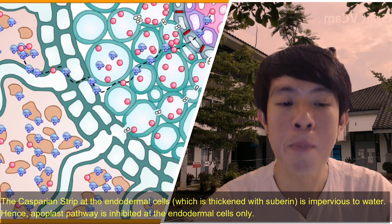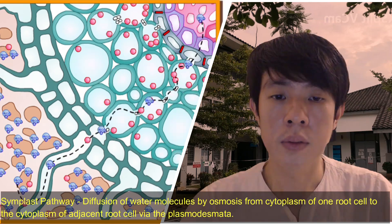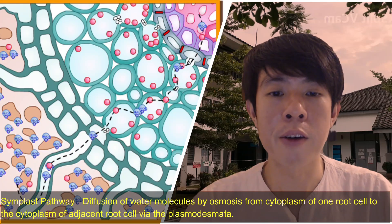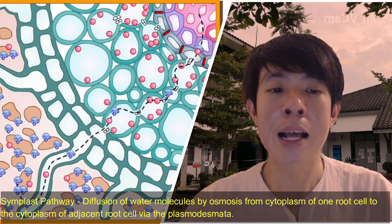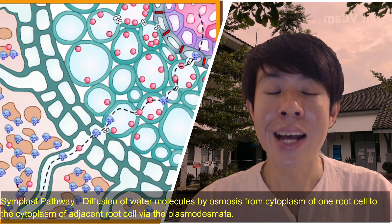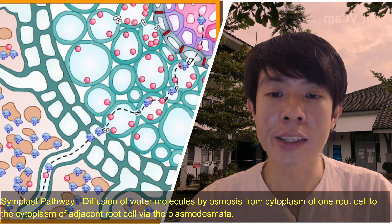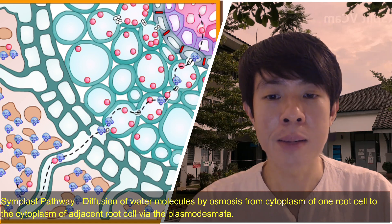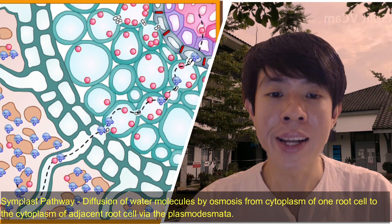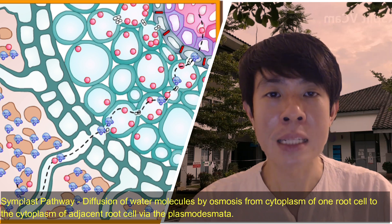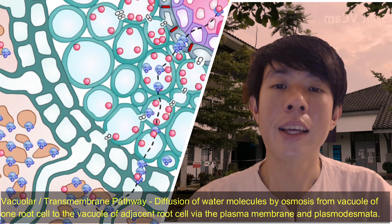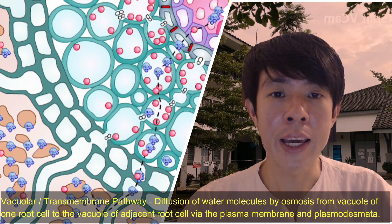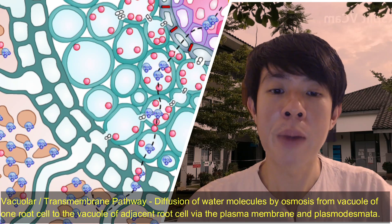In the symplast pathway, look carefully how water diffuses by osmosis down the water potential gradient from one cytoplasm of root cell to another via the plasmodesmata.